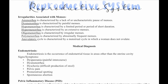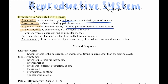Let's review the reproductive system. Irregularities associated with menses include: amenorrhea — lack of or uncharacteristic pause in menses; dysmenorrhea — painful menses; hypomenorrhea — limited or short-duration period; hypermenorrhea — extensive menses; algomenorrhea — irregular menses; polymenorrhea — abnormally frequent menses; and anovulation cycle — a menstrual cycle in which a woman does not ovulate.